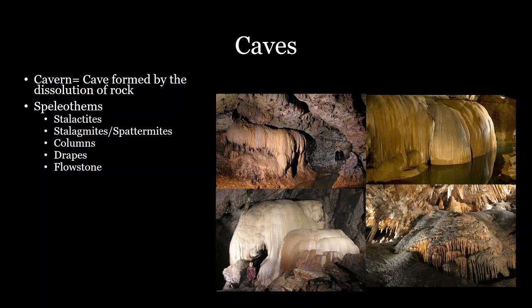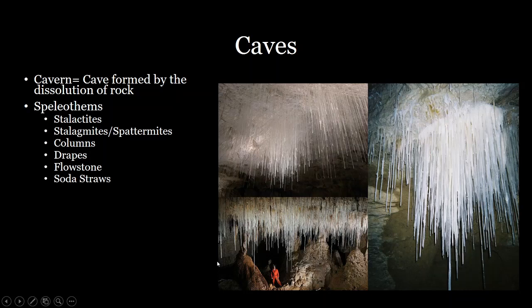Next we have flow stones. As a waterfall or a flow of water in a cave moves over an object, it can deposit limestone onto that object — it can look like a frozen waterfall or a smooth limestone feature as water flows over it continuously and deposits. These can take a number of different shapes, are usually quite large, and develop as water flows from one location to the next.